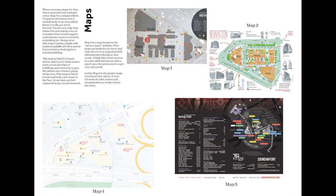This section compares the different maps of New Acton and how they display the area. They all share the same shape, however each one emphasises different things. Map 1 focuses on the buildings and what they have to offer. Map 2 looks at the area as a whole, with graphic depictions of architecture and landmarks. Map 3 shows the area from an event point of view, showing all of the different activities that can be found at New Acton during this period.